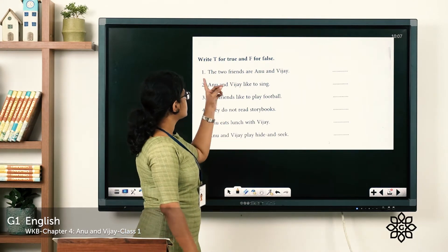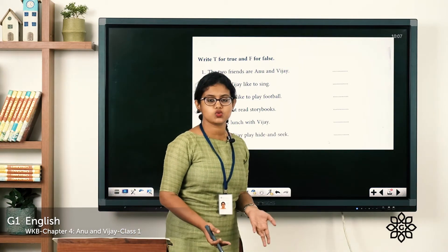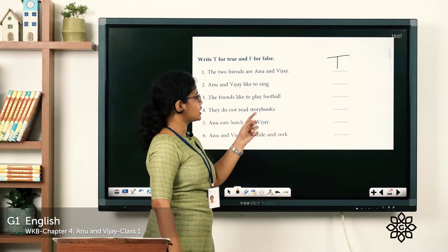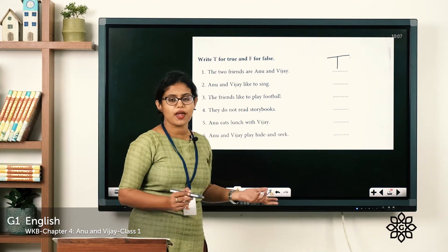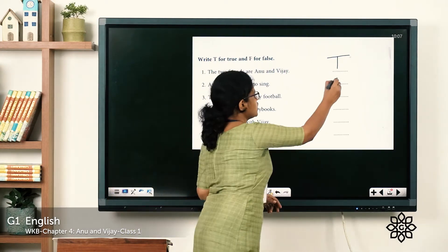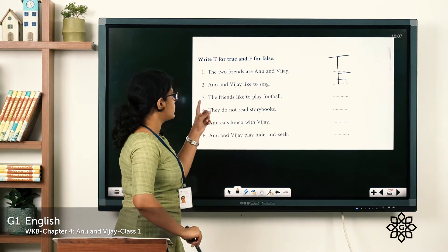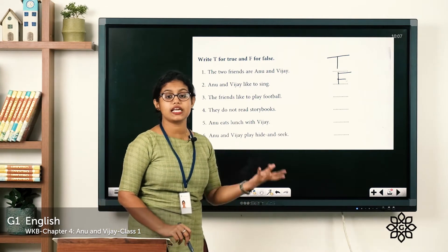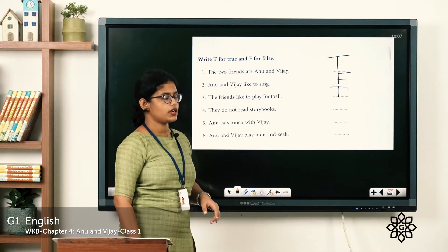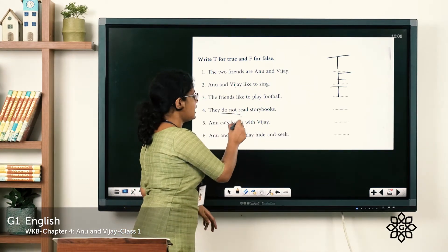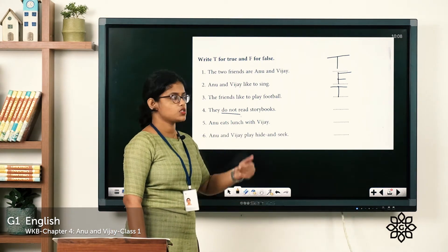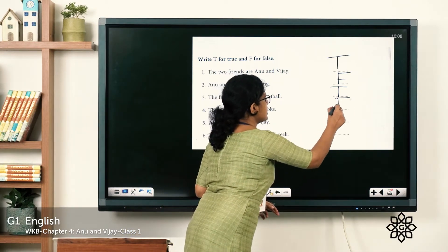Let's see the answers. 'The two friends are Anu and Vijay' — is it true or false? It is true. You can write T. 'Anu and Vijay like to sing' — in the reading passage it is not mentioned anywhere that they like to sing, so the statement is false. Write F. 'The friends like to play football' — the passage clearly says they like to play football, so the answer is true. 'They do not read storybooks' — the passage says they like to read storybooks together, so the statement is false. The answer is F.